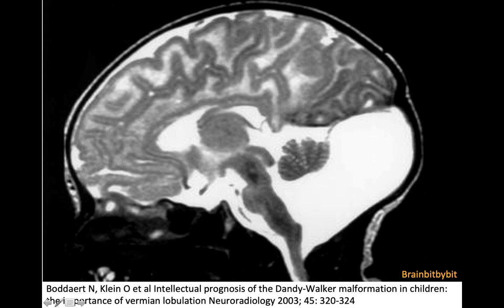If you want to make a prognosis for a patient with Dandy-Walker malformation, you can look at the lobulation of the vermis because this corresponds with the intellectual prognosis. Thanks for watching, and until next time when we will continue with Blake's pouch cyst.